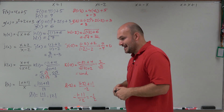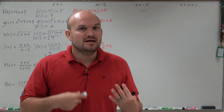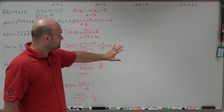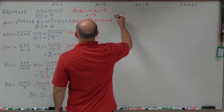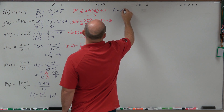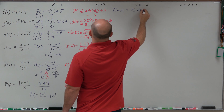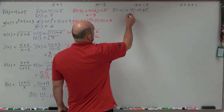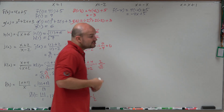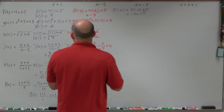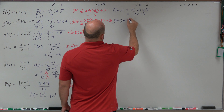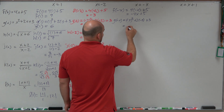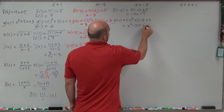Now let's move on to variable inputs — it's basically the same thing, all you're doing is plugging in those values. The simplifying can be a little bit different since we're working with expressions. You're just going to change your input value to negative x. For f of negative x, that gives 4 times negative x plus 5, so the output is the expression negative 4x plus 5. For g of negative x: negative x squared plus 2 times negative x plus 3. Negative x squared becomes positive x squared, so we get x squared minus 2x plus 3.